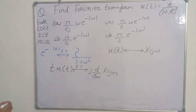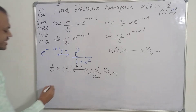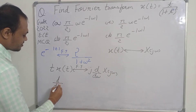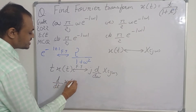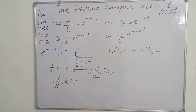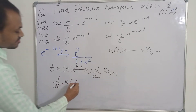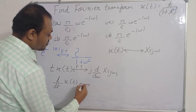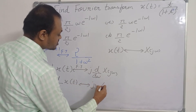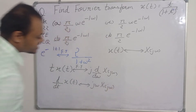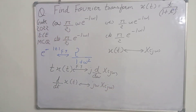For reference, the differentiation-in-time-domain property is: d/dt [x(t)] ↔ jω · X(jω). But we do not need to use the time-domain differentiation property here.